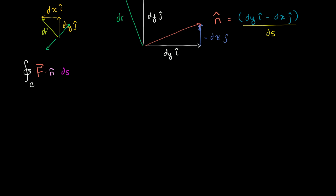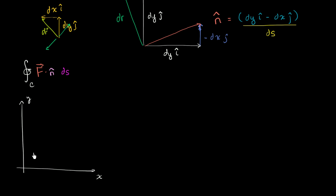So first let's just think about this. Let me draw a coordinate plane here. This right over here is our y-axis, and that over there is our x-axis. Let me draw my curve — it might look something like this, my contour — and it's going in the positive counterclockwise direction. And now we have our vector field.